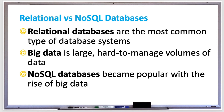All the data in each column has the same format. All the data in each row represents a single object, such as a person object for a contact list or a car object for a car dealer inventory list. They also support SQL and are ideal for databases that require accuracy for all transactions, such as a banking database.